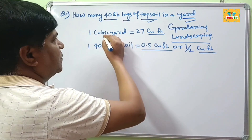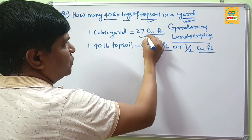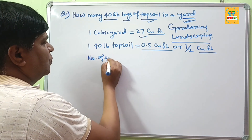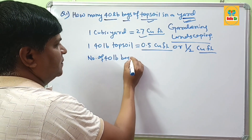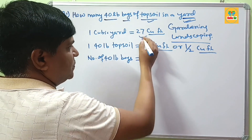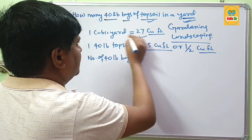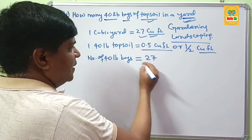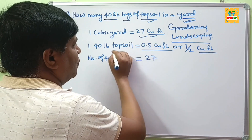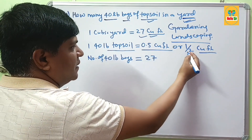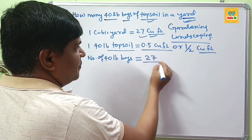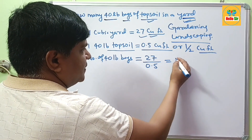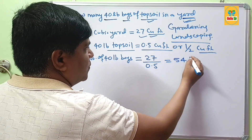To find the number of 40 lb bags required for 1 yard, since 1 yard equals 27 cubic feet, you simply divide the total cubic feet in 1 yard — which is 27 — by the volume of each 40 lb bag, which is 0.5 cubic feet. When 27 is divided by 0.5, this comes out to about 54 bags.